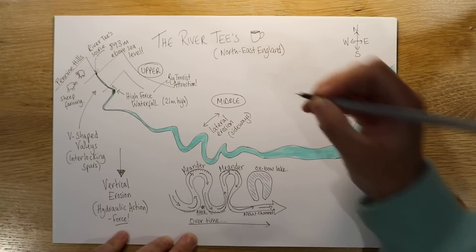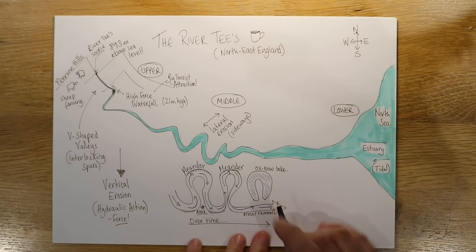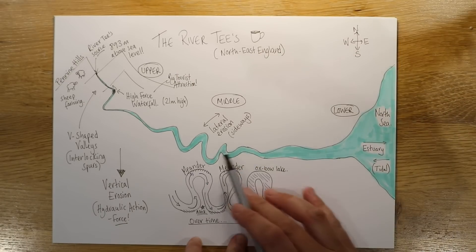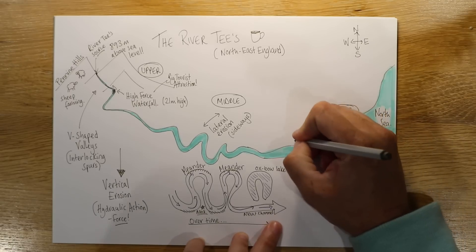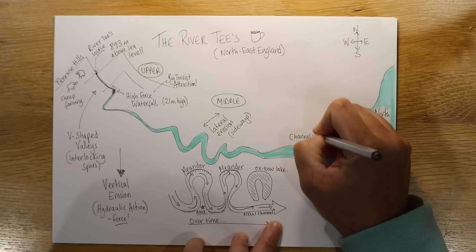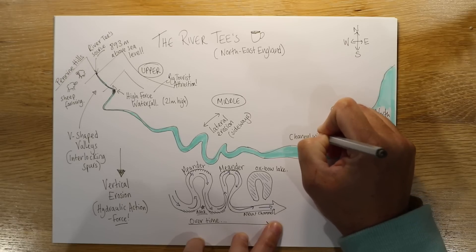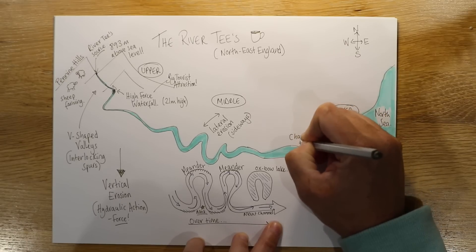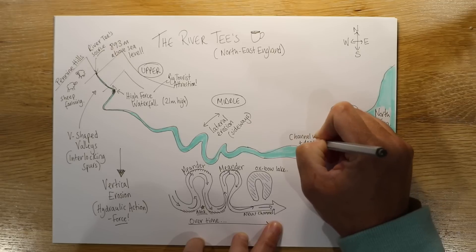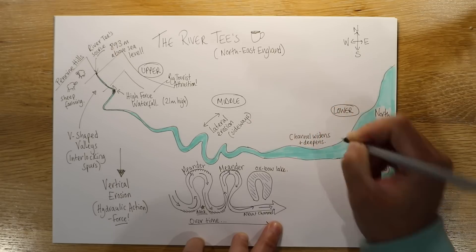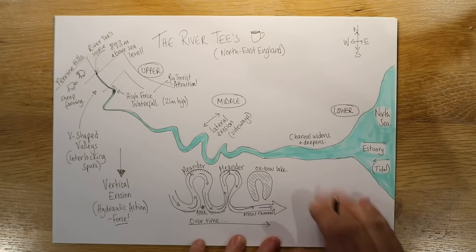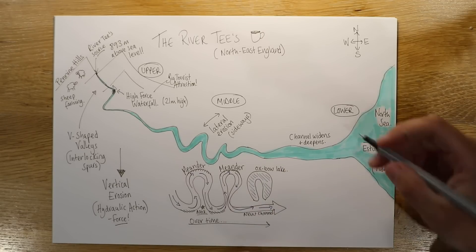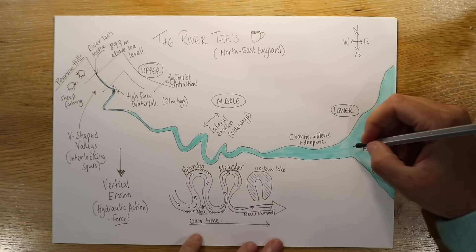Remember, in the middle course of the river we don't have vertical erosion — we have side to side erosion known as lateral erosion. Still hydraulic action, still the force of the water, but it's sideways. And then as we go further towards the sea, the channel widens and also deepens. We often start to see larger boats, larger container ships, using the lower course of the river, transporting cargo and things like that.